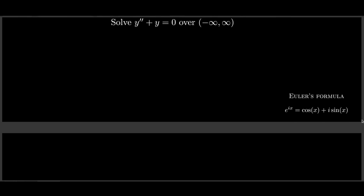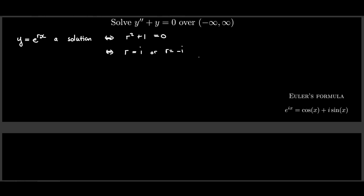Let's solve one last example. Using our technique, we try the substitution y = e^(rx), and this is a solution if and only if the quadratic r² + 1 = 0 is satisfied. Here we run into an interesting situation because r = i or r = −i, where i = √(−1).